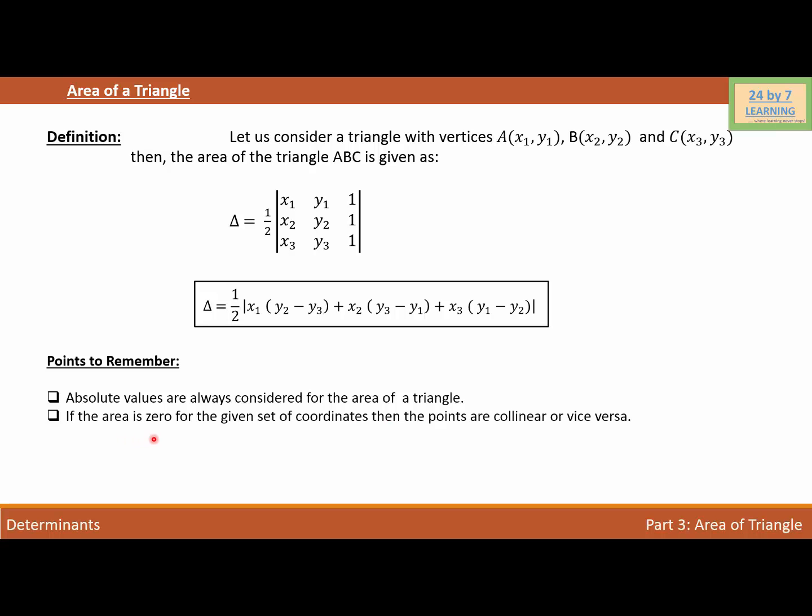The second one we need to remember is that if the area of the triangle is 0, means delta is equal to 0, then the points are collinear.